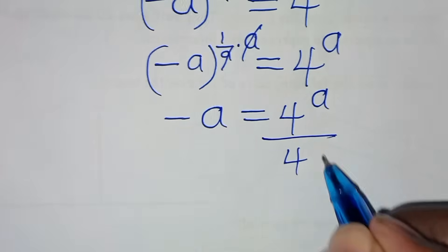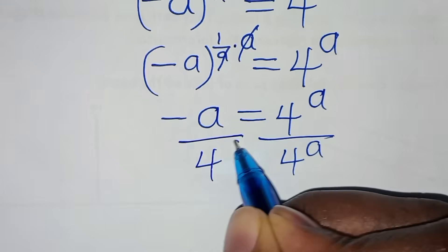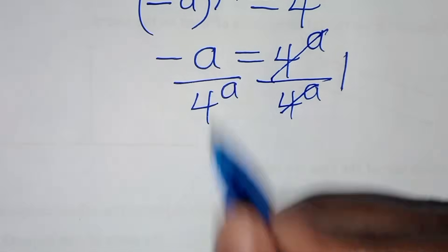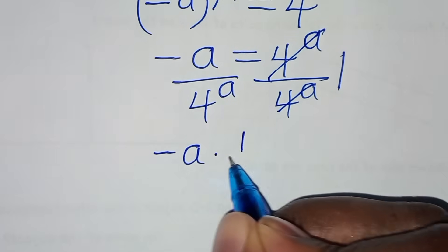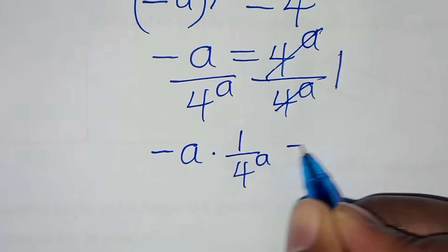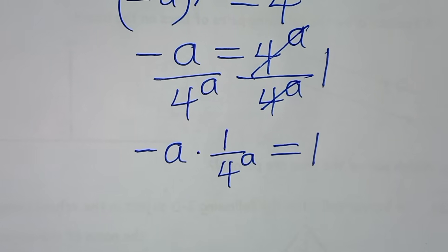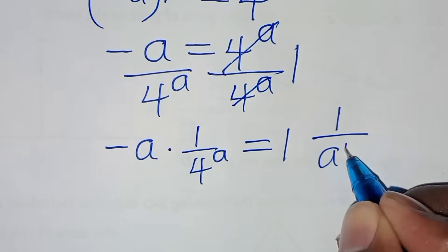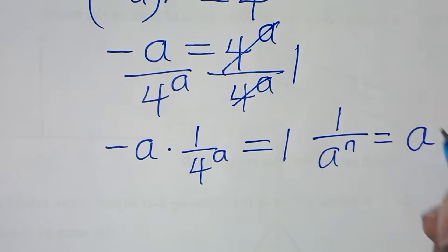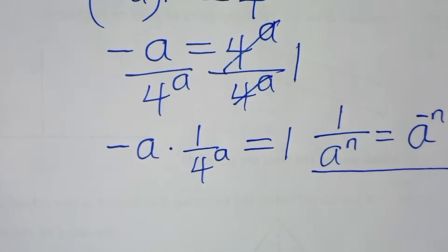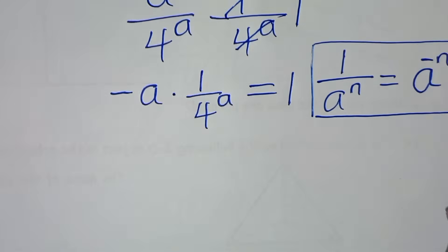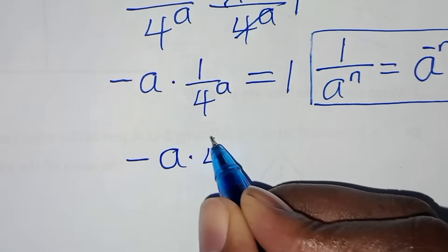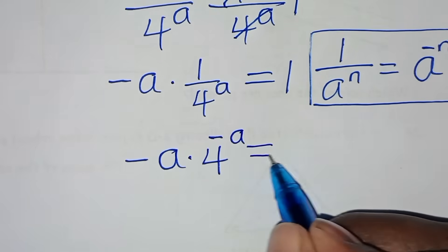Next, divide both sides by 4 to the power of a. Simplifying, we get: minus a times 1 over 4 to the power of a, equals 1. Using the property that a over a to the power of n equals a to the power of minus n, this becomes: minus a times 4 to the power of minus a, equals 1.